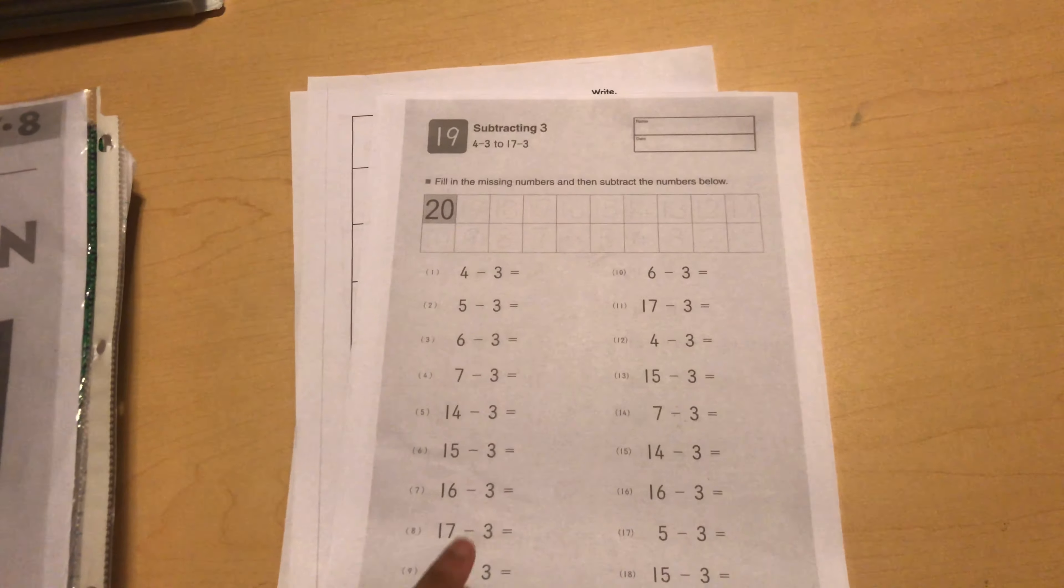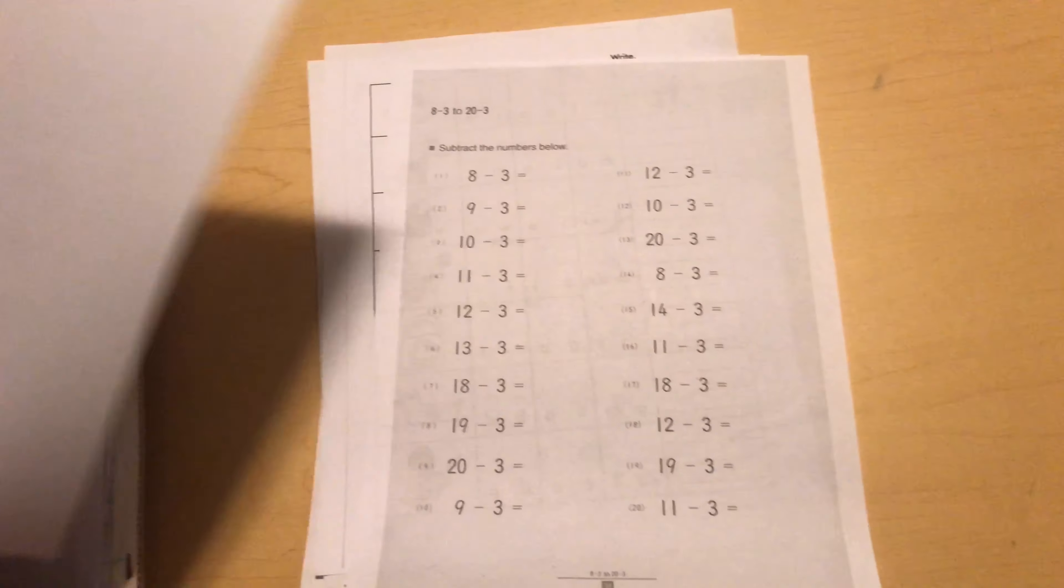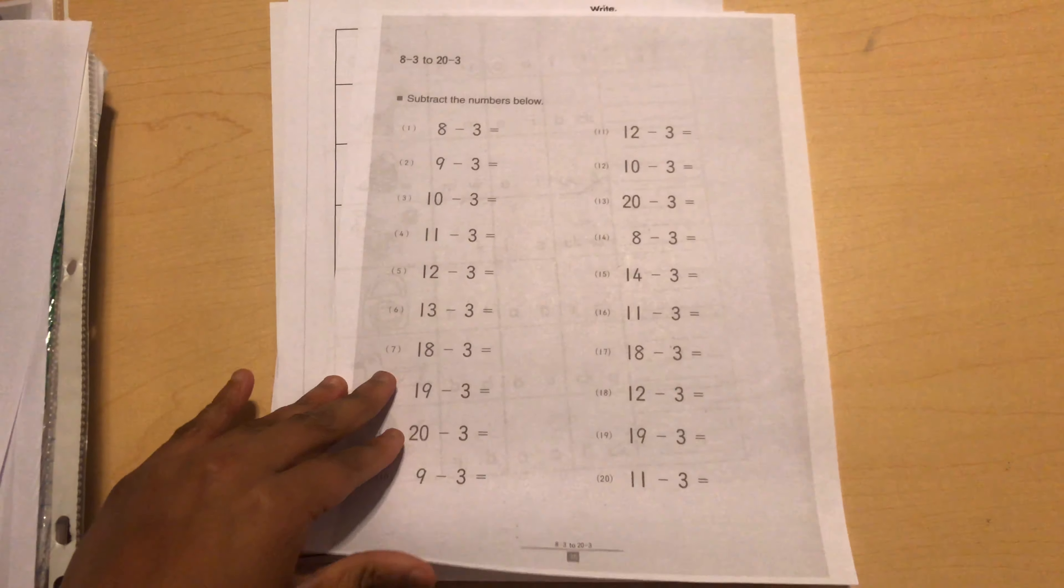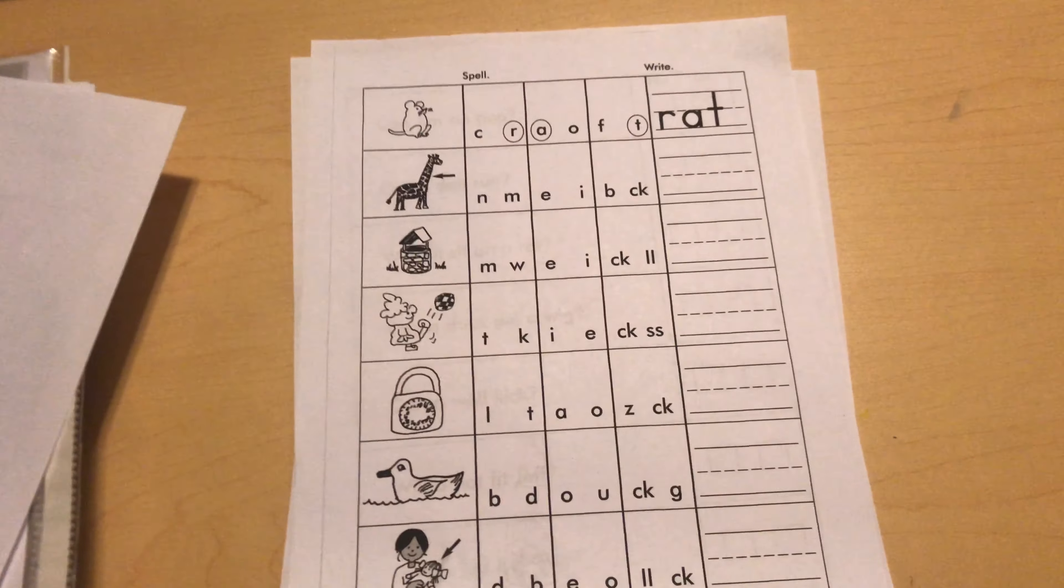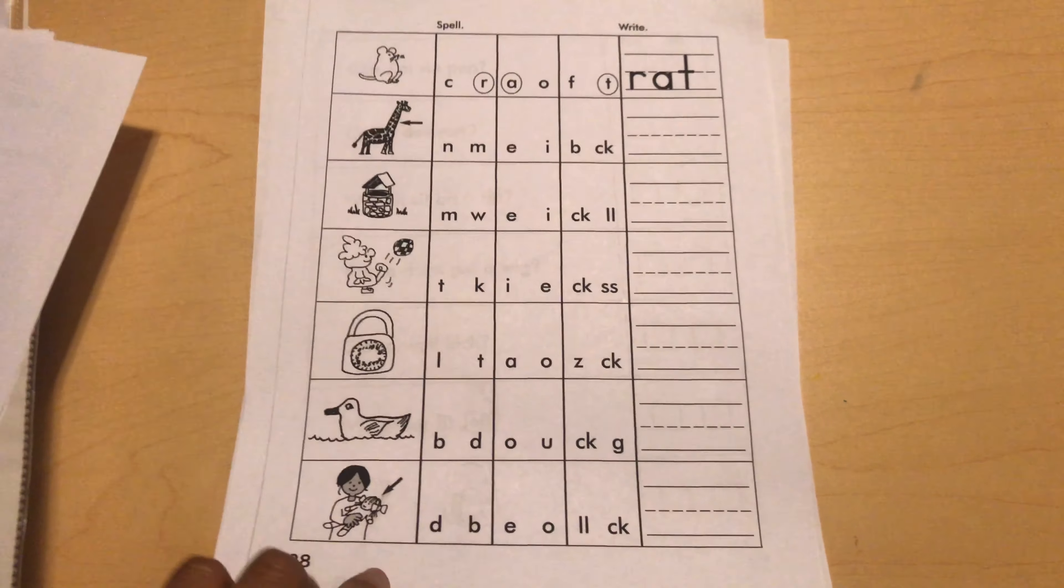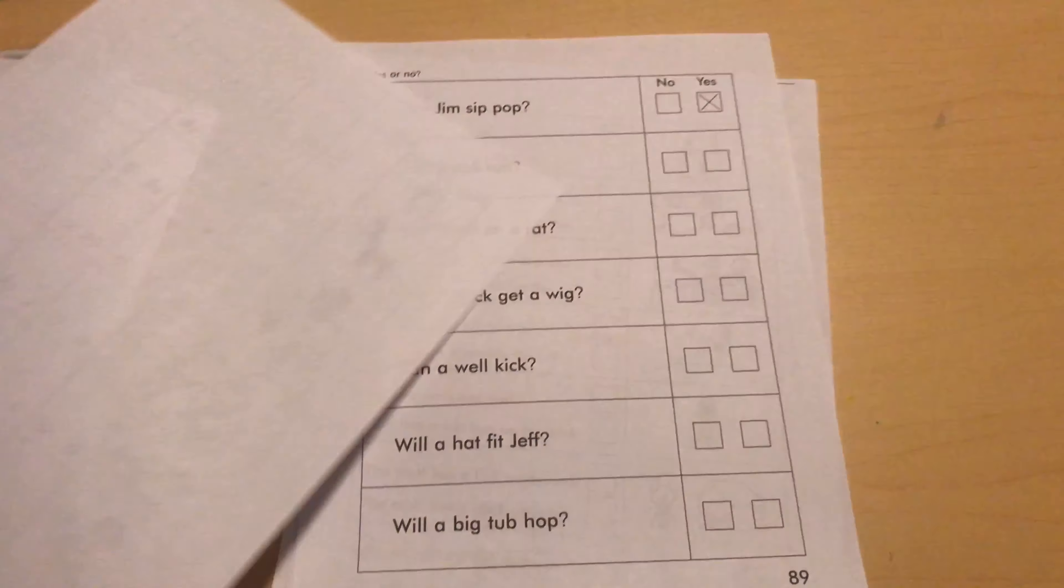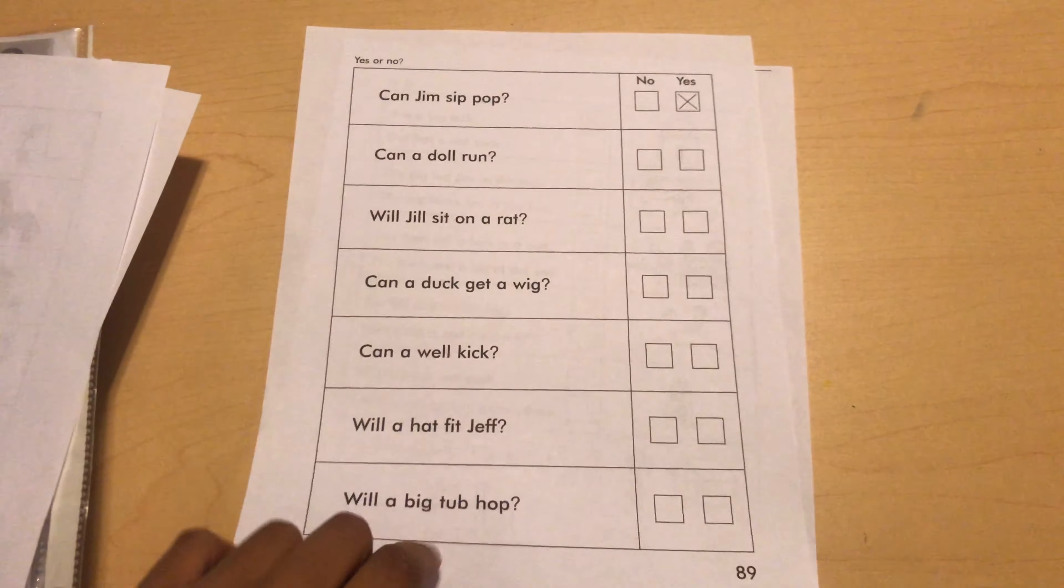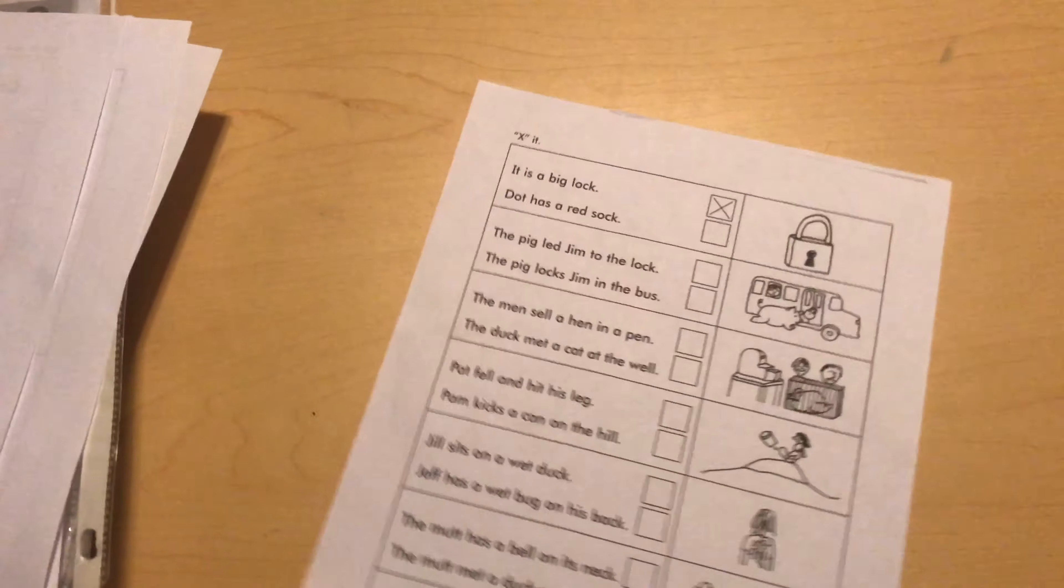This is the simple subtraction that both the kids are working on, and this is what it covers. And he's almost done with this, so this is lesson 19, so this is that one and this one.